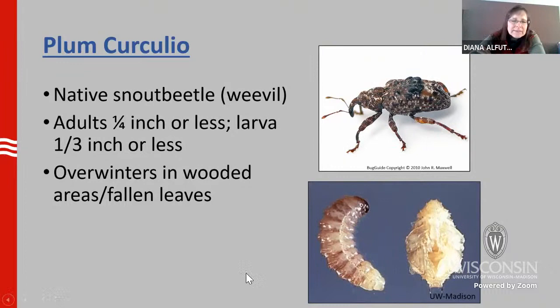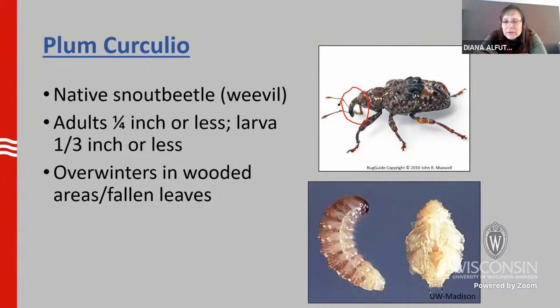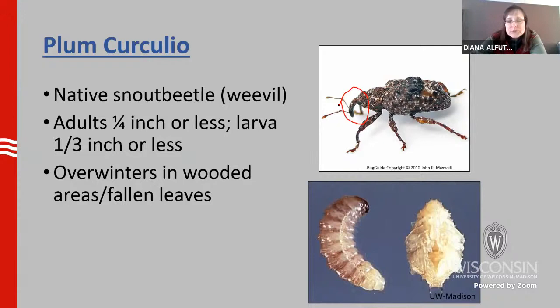The first insect we're going to talk about is plum curculio. This is a native snout beetle or weevil — you can see the picture on the right-hand side. It has a little snout that it uses to penetrate fruit. These are little critters, about a quarter of an inch; the larva is maybe about a third of an inch and you'll hardly ever see the larva. They overwinter in wooded areas and are the first insect to come out and do damage. If you live next to the woods or have wild plum trees around, you might have more of this problem.